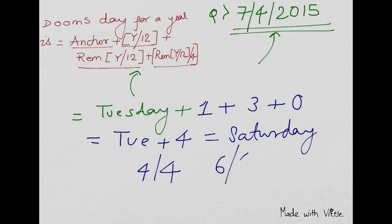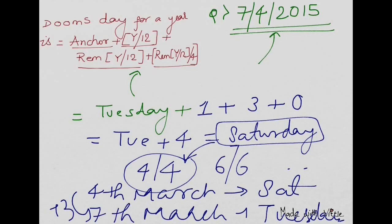The closest one is 4/4. This is for fourth April 2015. On the seventh, it will be plus 3, because you have to go from the 4th to the 7th. Fourth is Saturday, so seventh will be Tuesday.